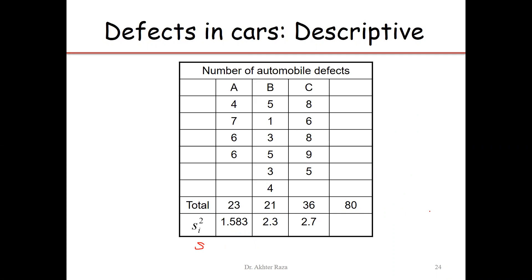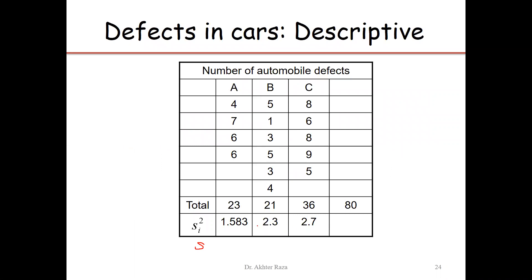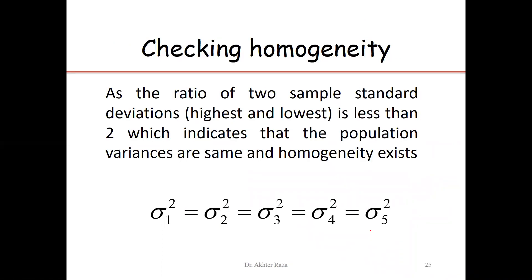We can use Levene's test for testing the assumption of equality of variance, but there is also an informal test: the ratio of the highest sample standard deviation to the lowest sample standard deviation is taken. If the ratio is less than two, we can say the variances are the same. If the ratio is greater than or equal to two, there is a chance that the homogeneity assumption is not satisfied. In our case, the ratio of sample standard deviations is less than two.